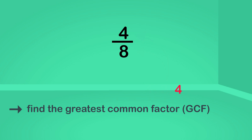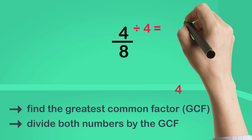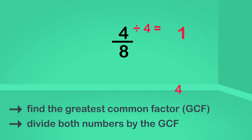Then we divide both the numerator and the denominator by the greatest common factor. Four divided by four? One. Eight divided by four? Two. Four-eighths simplified is one-half.